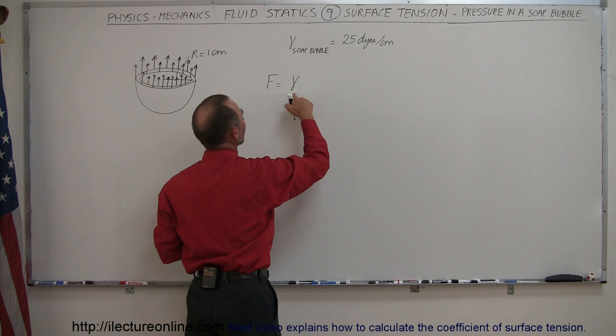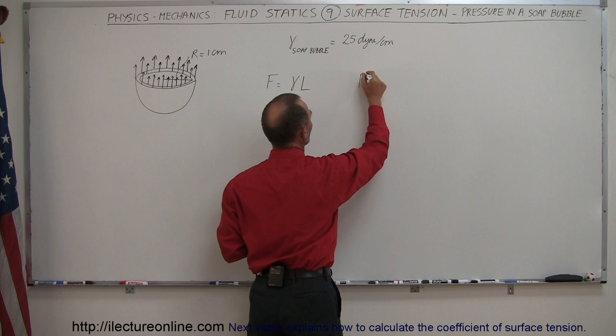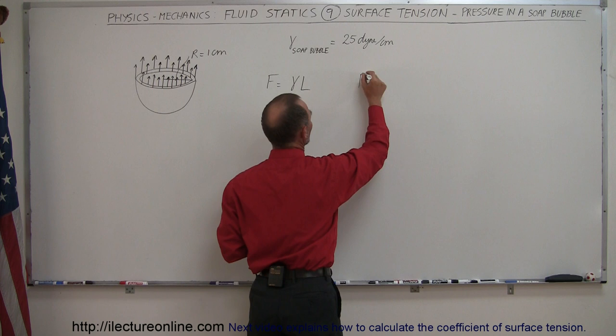water, or water with soap in it, times the total length of the surface. In this case, it will be twice the circumference of the soap bubble when we cut it in half. And then also, we can say that the pressure is equal to force divided by the area, which implies that the force is equal to pressure times area.